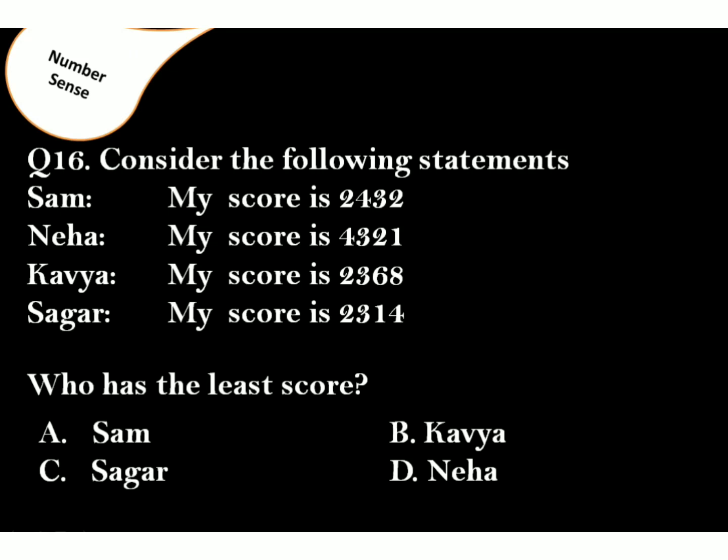Consider the following statements. Who has the least score? The correct answer is option C. As 2314 is the least number.